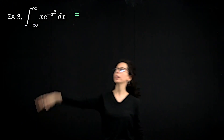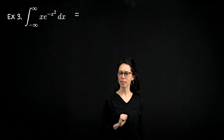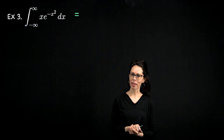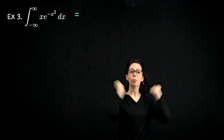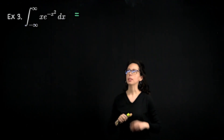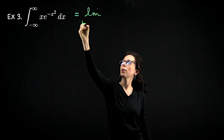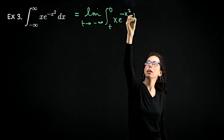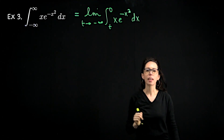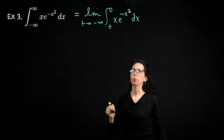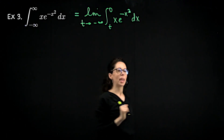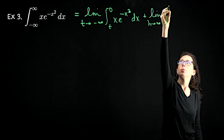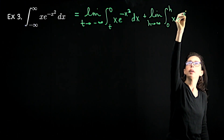Let's wrap up with this example, where again we're doing an integral from negative infinity to infinity. This time we're looking at the function y equals x times e to the negative x squared. We're going to need to do a u-substitution. The overall setup is the same as the previous two integrals, but as we evaluate each of the two pieces, we will incorporate a u-substitution. Breaking this up at zero: the first piece is the limit as t goes to negative infinity of the integral from t to zero of x e to the negative x squared dx. The second piece is the limit as h goes to infinity of the integral from zero to h of x e to the negative x squared dx.